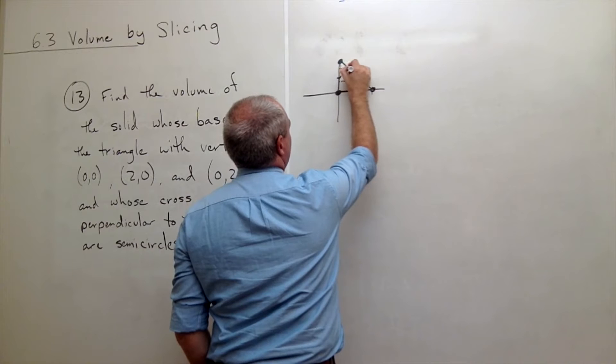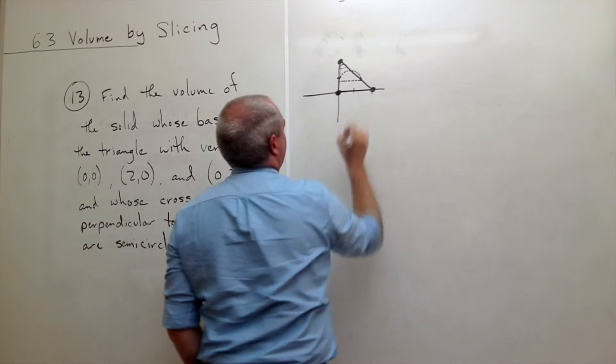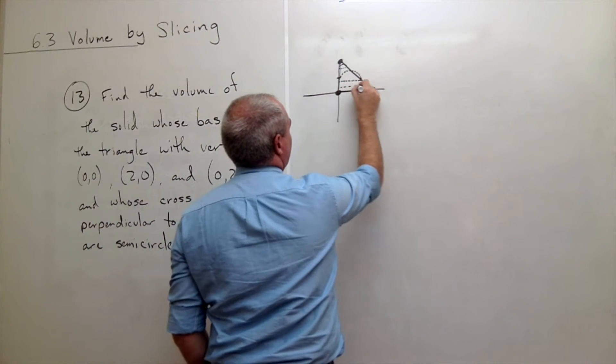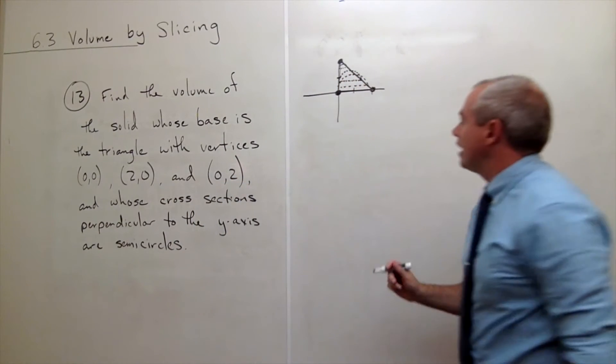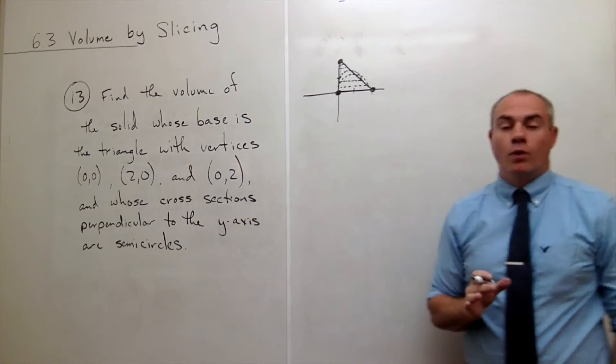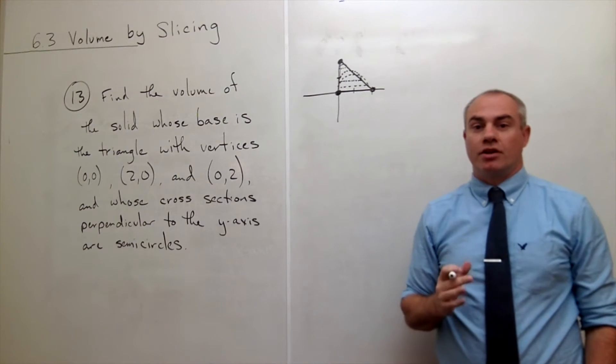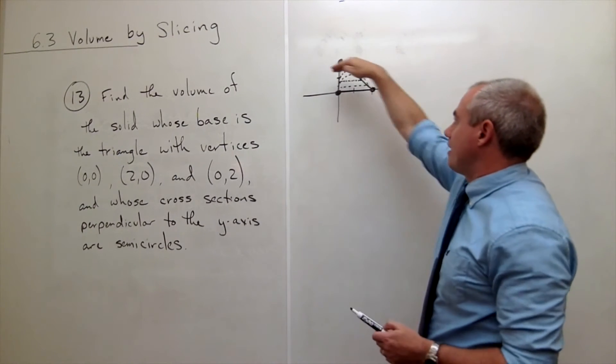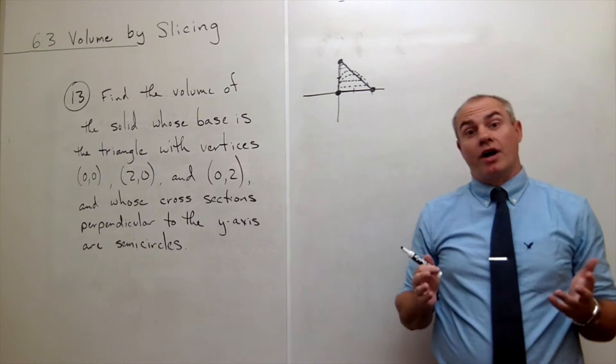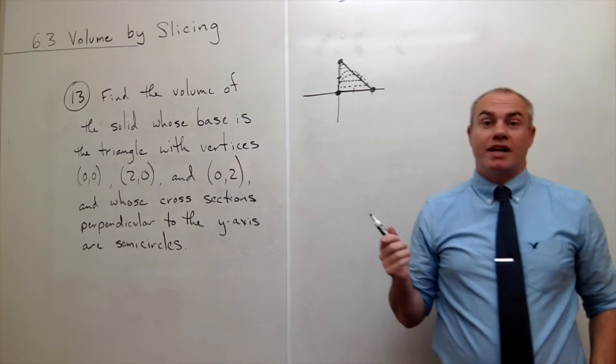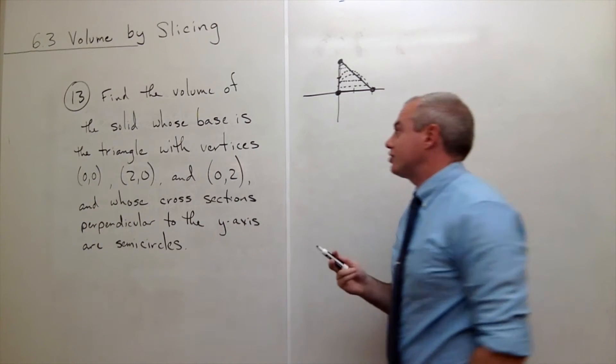And if I made a cut right here I would get a little semicircle. If I made a cut right here I would get a larger semicircle. And you can start to see what this shape would actually look like. So every cut that I make along here gives me a semicircle. Now we can use that information to get the volume of that shape.